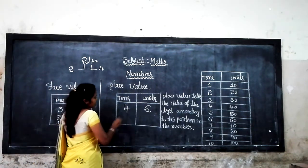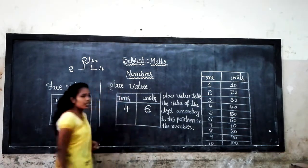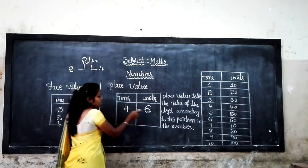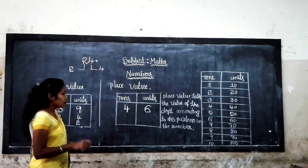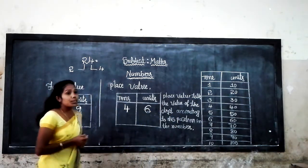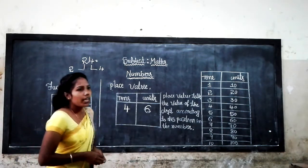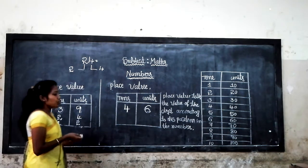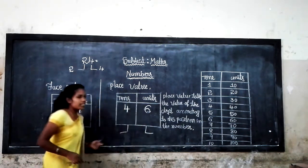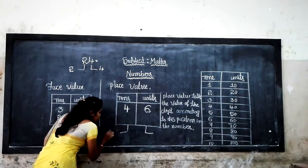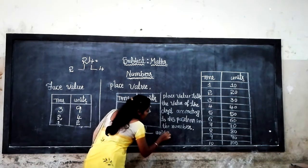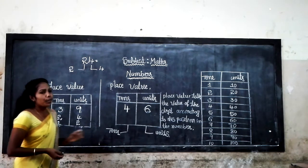Look at the number 46. In 46, there are 4 tens and 6 units. What is the meaning of 4 tens? 4 tens means 40 units — it is 40. So the place value of 4 in the tens place is 40. And 6 is in the units place.